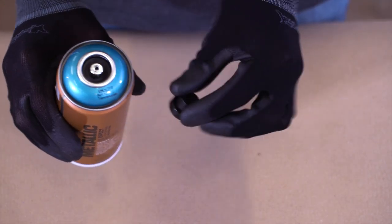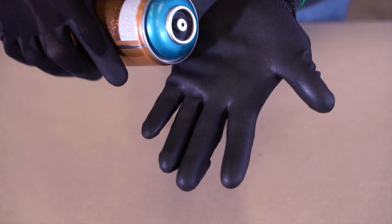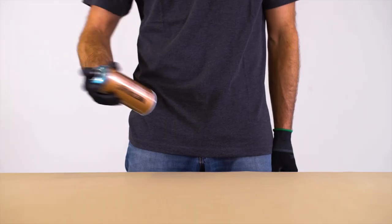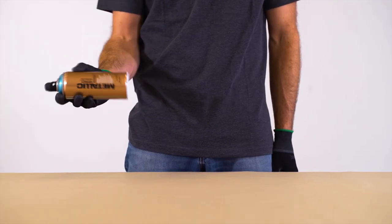Remove the safety ring by removing the nozzle and turning the can upside down. Shake can well for 3 minutes and re-shake after every pause and application.